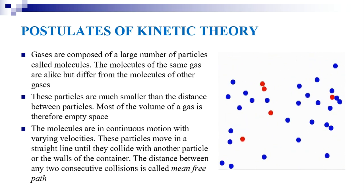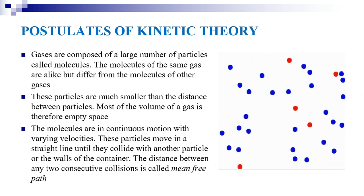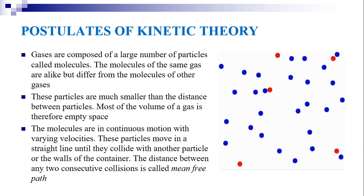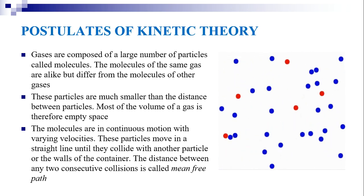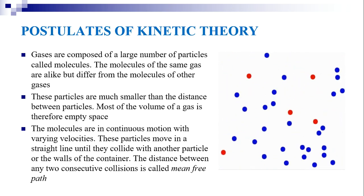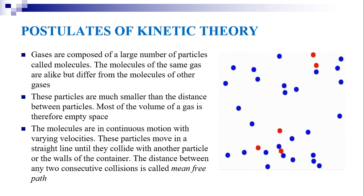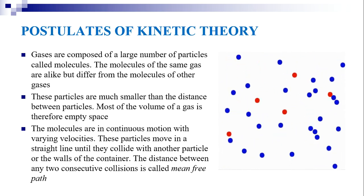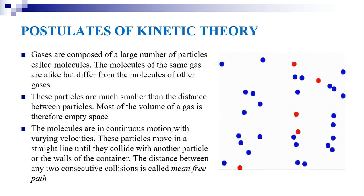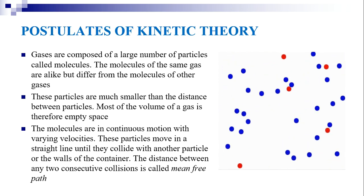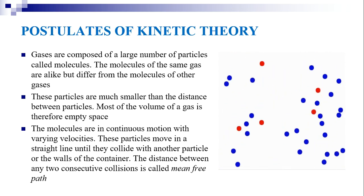The molecules are in continuous motion with varying velocities — each particle moves with a different velocity. These particles move in a straight line until they collide with one another or with the walls of the container. After a collision, the molecule deviates to another straight-line path. The distance between any two consecutive collisions is called the mean free path.